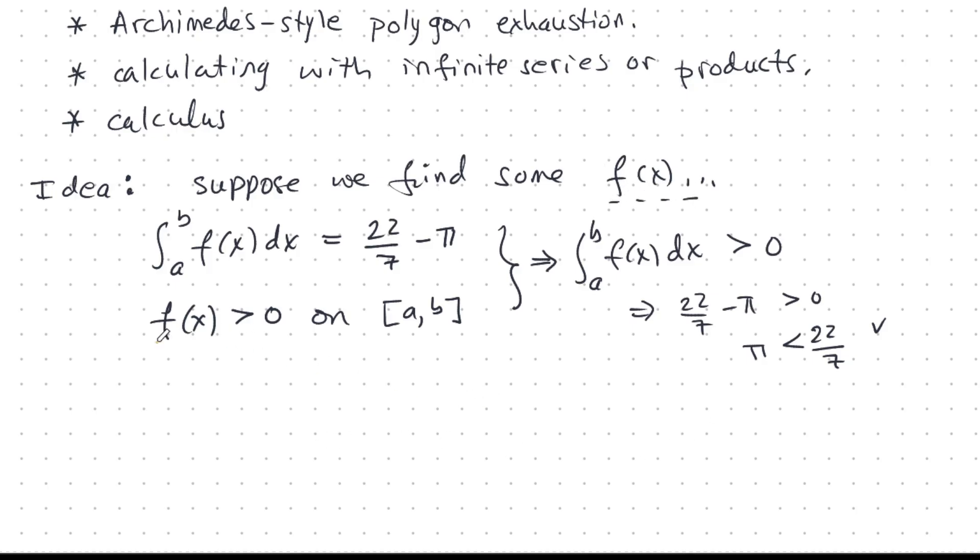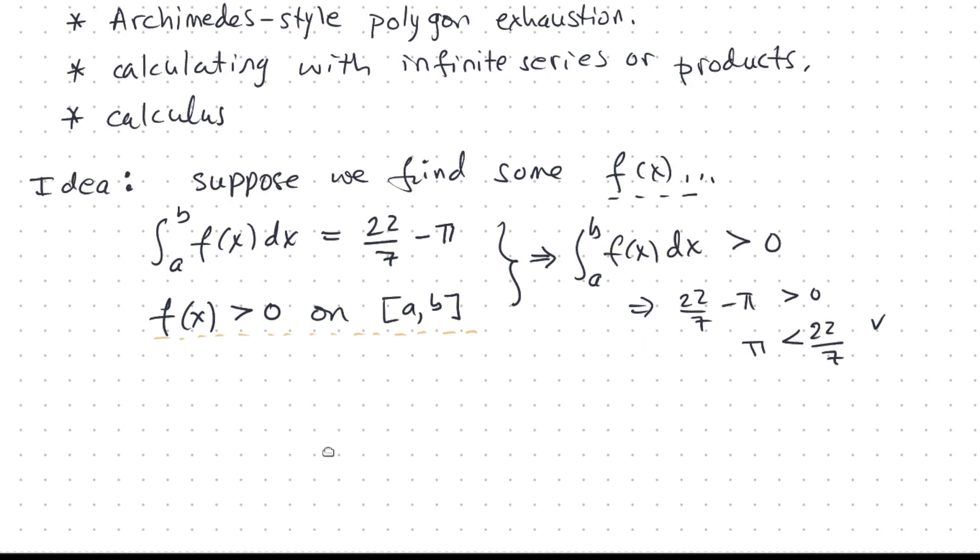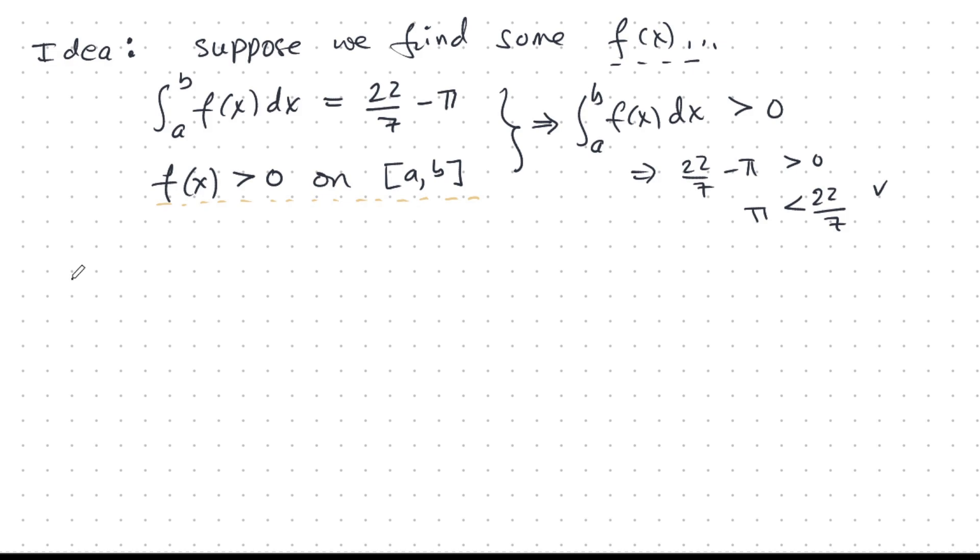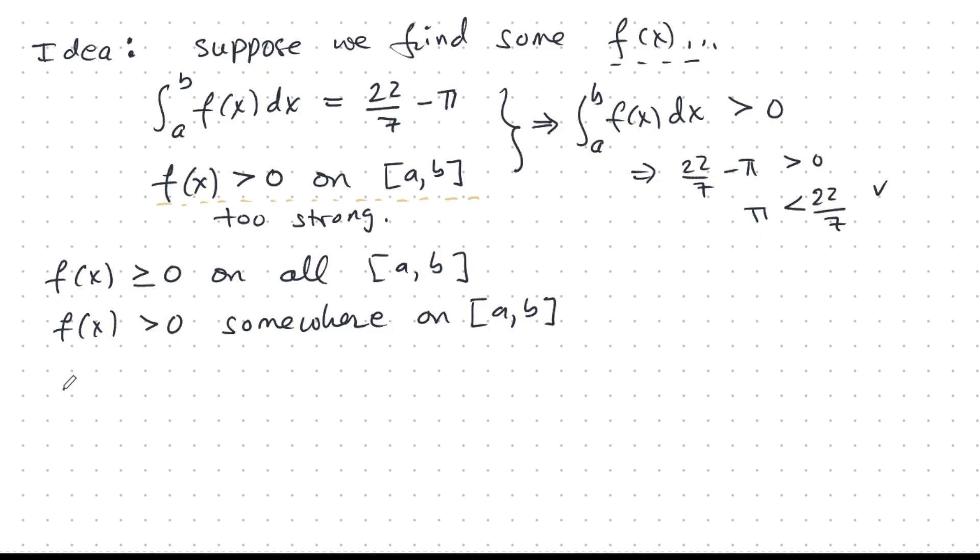With a little bit more thought, we see that this condition is kind of too strong. So let's make it weaker. Let's lighten up on this condition a bit. Suppose f of x is non-negative on all of AB, and that it's positive somewhere. So it doesn't have to be positive everywhere, just somewhere, and non-negative everywhere. And one last thing, f of x is continuous on AB.